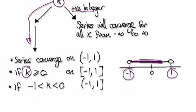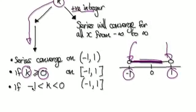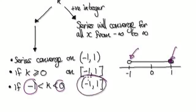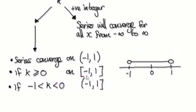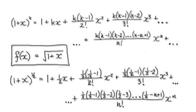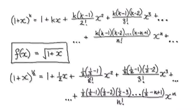If k is equal to or greater than 0, then you can include the two endpoints. But if k is between negative 1 and 0, then you can't include one endpoint but you can include the other. This is just revision, so now let's look at an example.